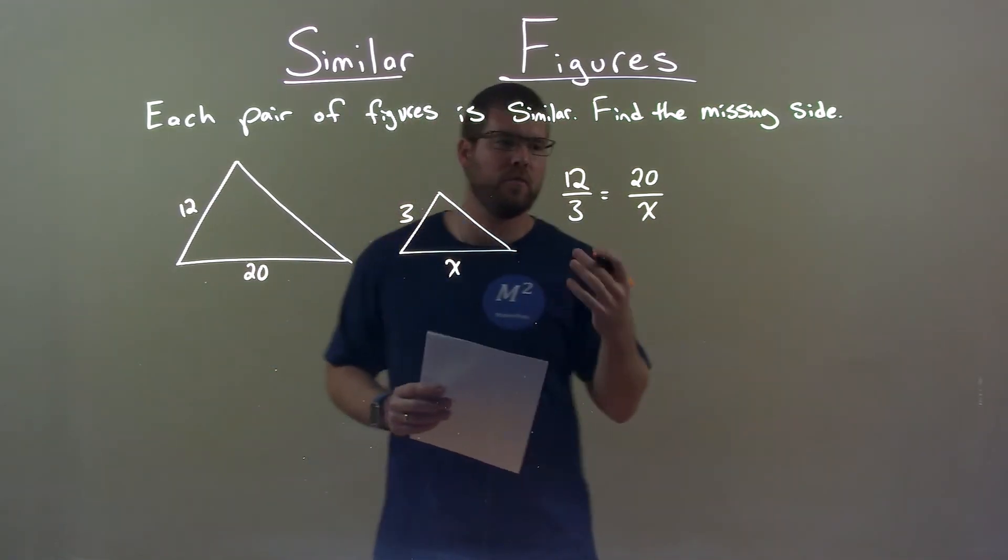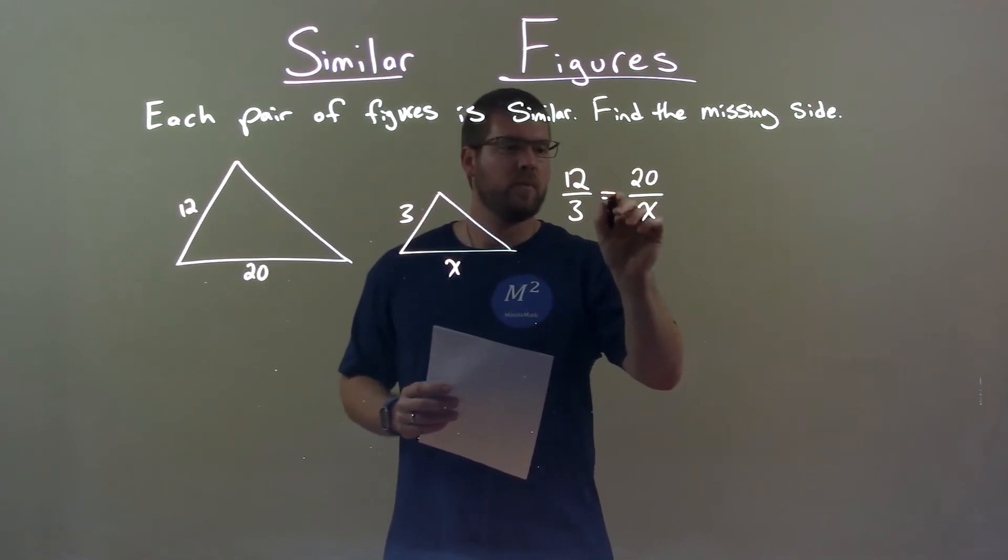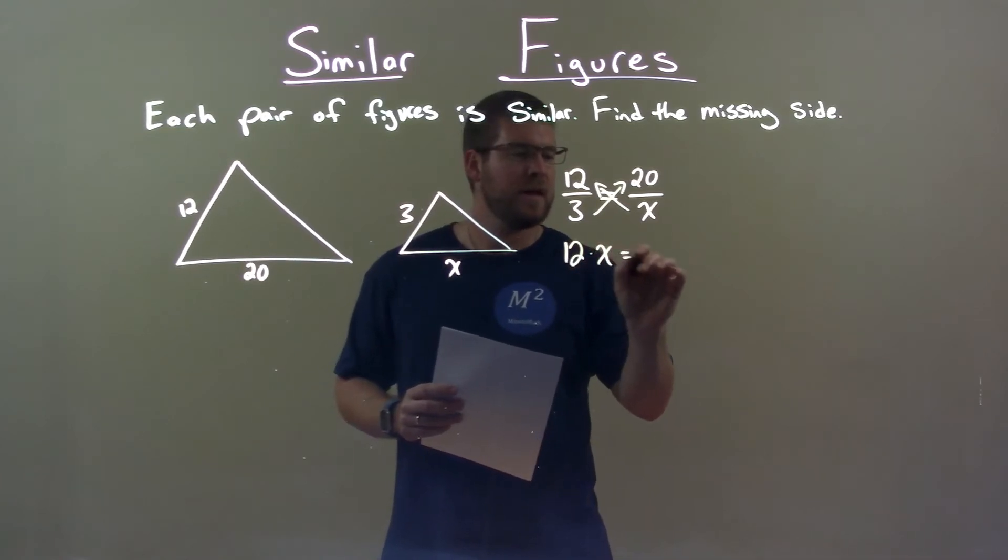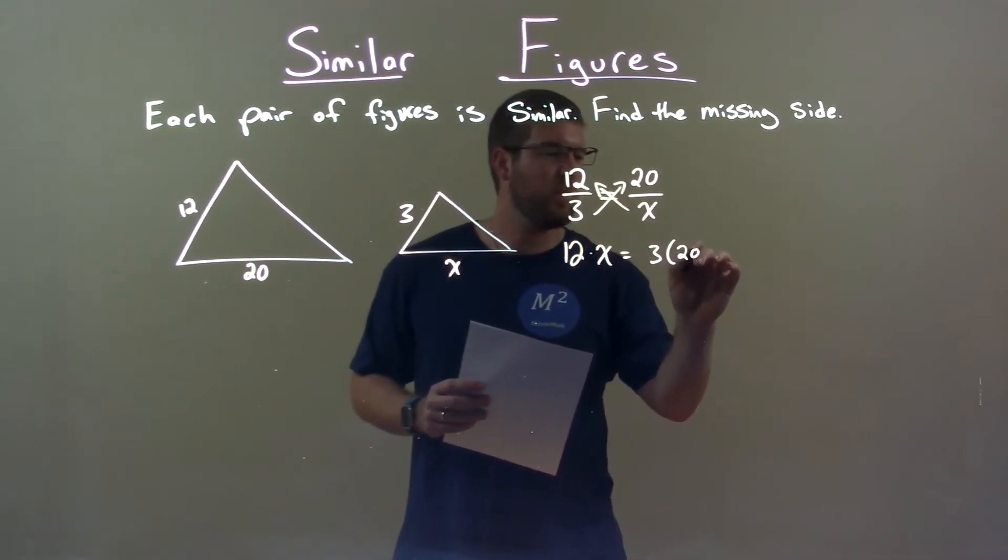Now we have to solve this ratio. We cross-multiply, bring x in the numerator, and now we have 12 times x equals 3 times 20.